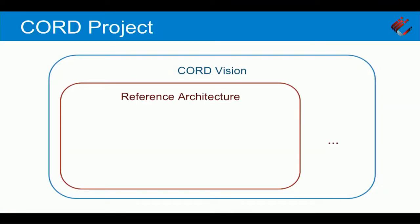That is the vision, and on the CORD website you'll find architectural requirements that reduce down to those five points. We start with that vision and we have a reference architecture — there could be others, but we have at least one. You're welcome to participate and bring other architectures. We would work to find commonalities, because we all benefit from the same framework, but at least we have one architecture to start with.